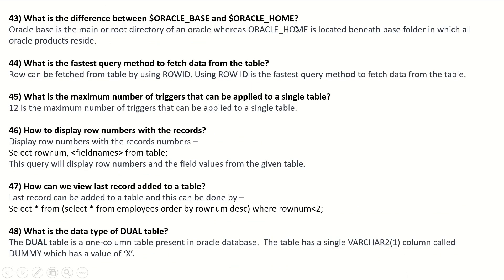What is the difference between Oracle Base and Oracle Home? Oracle Base is the main or root directory of Oracle, whereas Oracle Home is located beneath the base folder in which all Oracle products reside. What is the fastest query method to fetch data from a table? Using ROWID is the fastest query method to fetch data from a table. What is the maximum number of triggers that can be applied to a single table? 12 is the maximum number of triggers that can be applied to a single table.